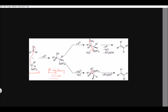This is the alpha silyl carbanion — the silyl group is here, and at the alpha carbon we have a negative charge, hence it's called the alpha silyl carbanion. When this alpha silyl carbanion attacks the ketone, we get beta hydroxysilane. It's called beta hydroxy because the hydroxy group is at the beta carbon.